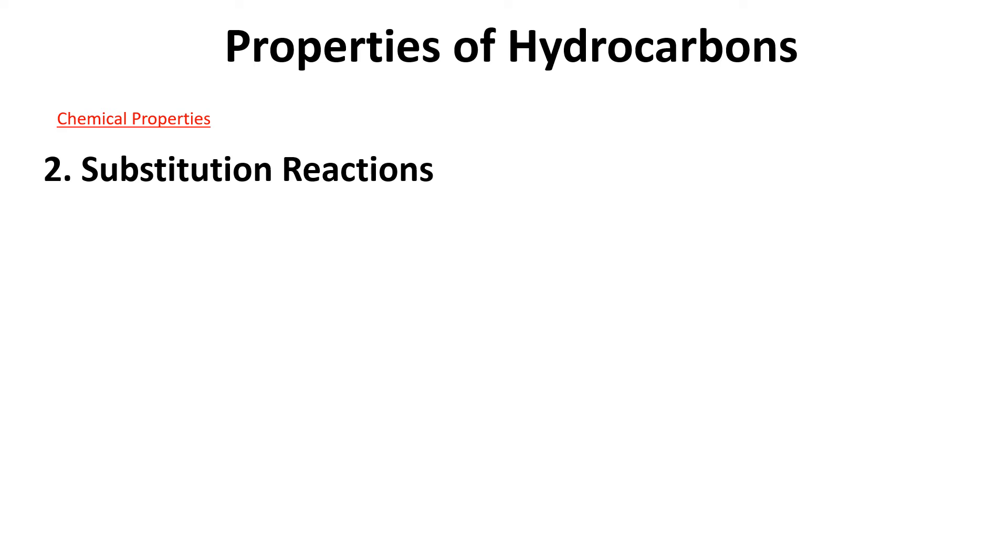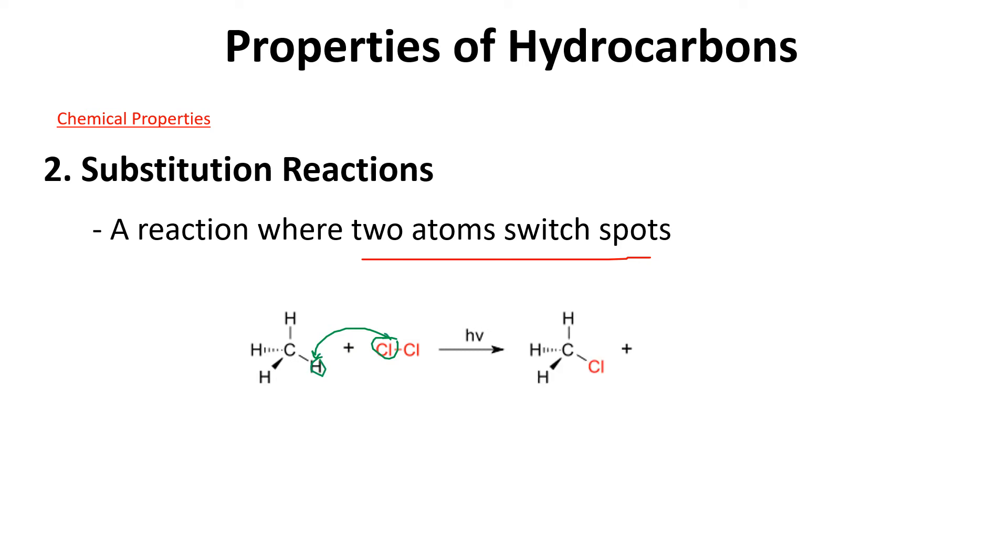Substitution reactions: if you play sports like volleyball or soccer, they make substitutions for players. Players are switching in and out. It's a reaction where two atoms are switching spots. We've got methane and chlorine. Our chlorine is going to switch with any one of the hydrogens. Let's pretend those two are switching. We're going to have two products: chloromethane and hydrochloric acid. Substitution reactions can only be done on saturated hydrocarbons. You can only put one of these chlorines or whatever you're putting on, one at a time.